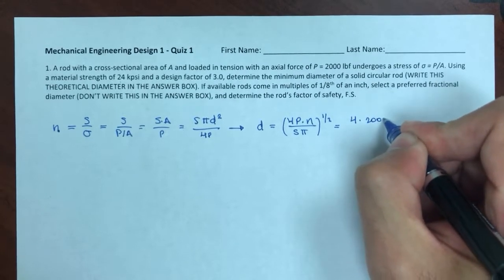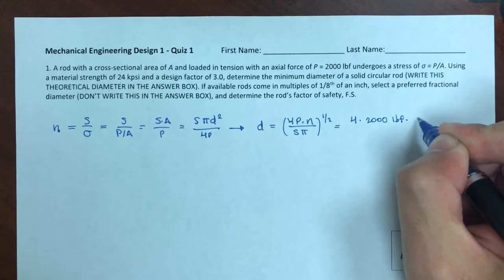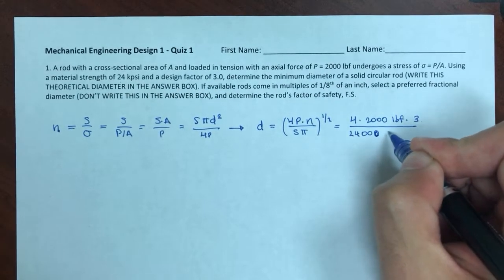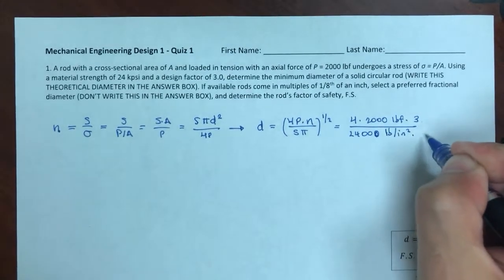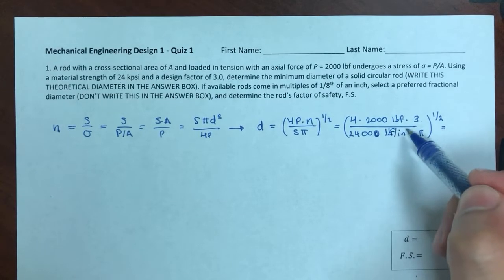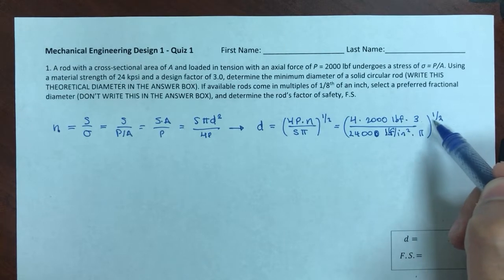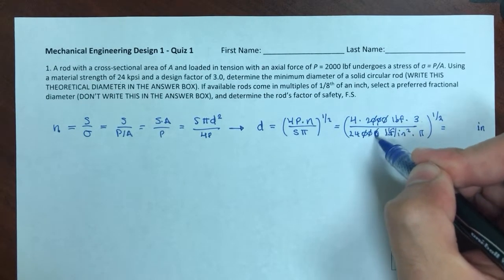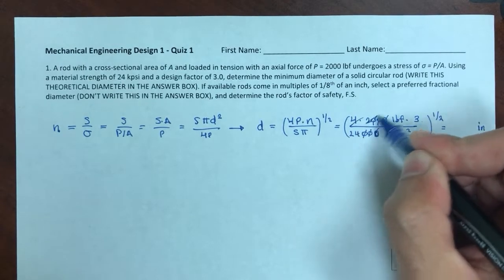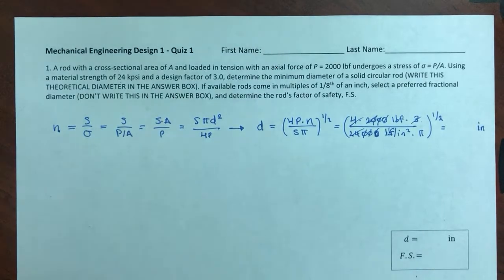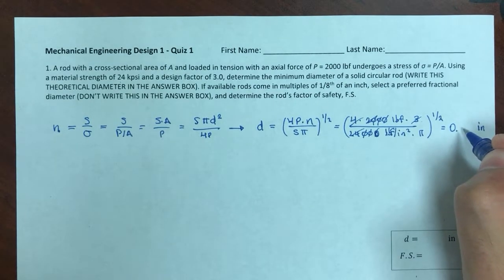I can solve for D by substituting the values: 4 times the load, 2,000 pounds, times the design factor 3, over 24,000 psi times pi, then take the square root. Pounds cancel, and the units simplify to inches, which makes sense. That works out to 1 over pi under the square root, giving D = 0.564 inches.